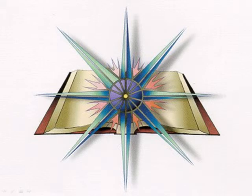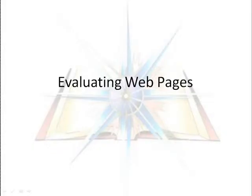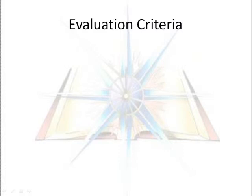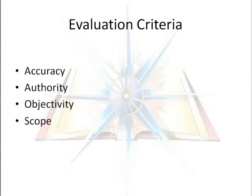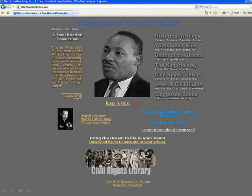So much information comes via the internet that it's an important skill to be able to evaluate web pages quickly and efficiently. This video will evaluate a web page using the basic criteria of accuracy, authority, objectivity, scope, currency, and usability. We use the same criteria to evaluate many types of information besides web pages, but the internet offers its own hurdles. I'll use the martinlutherking.org page to show each criteria.